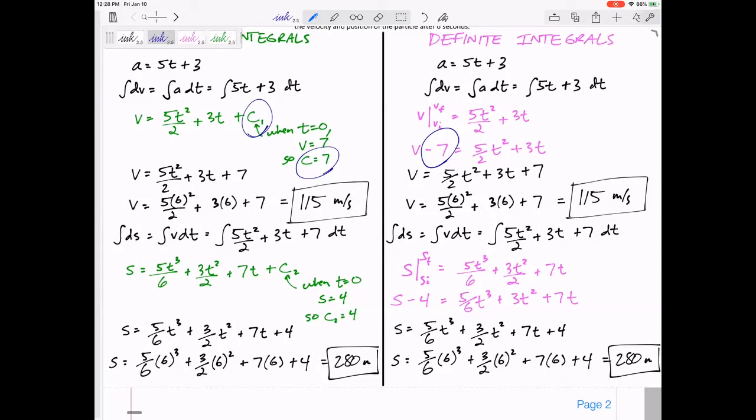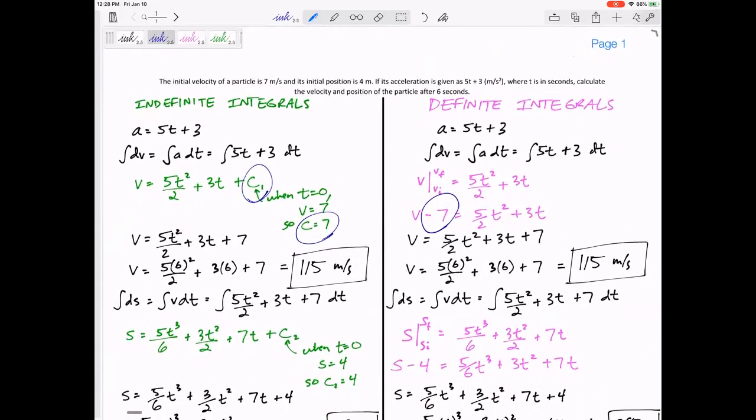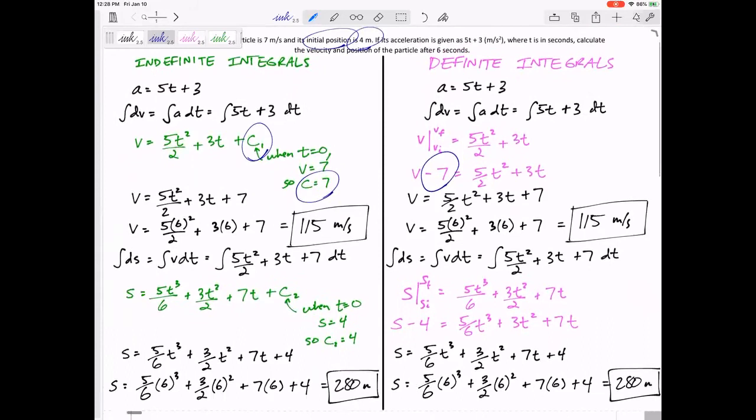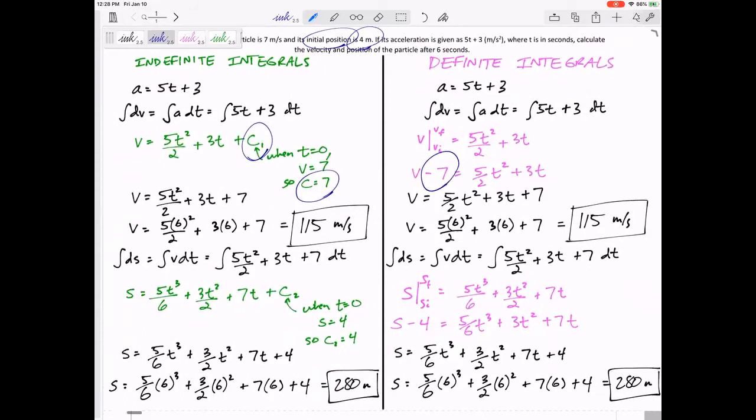How do you solve for plus C? Well, if you know that the initial position, if you know when T is equal to zero, my position was four, I'd plug in T is equal to zero, I'd plug in S is equal to four, and then solve for C.